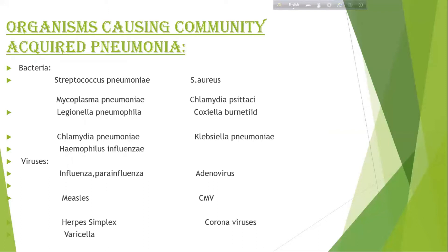Organisms causing community-acquired pneumonia. Bacteria: Streptococcus pneumoniae — the most common cause of pneumonia — Mycoplasma pneumoniae, Legionella pneumophila, Chlamydia pneumoniae, Haemophilus influenzae, Staphylococcus aureus, Chlamydia psittaci, Coxiella burnetii, and Klebsiella pneumoniae.